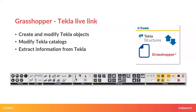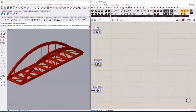Tekla Grasshopper Live Link enables algorithmic modeling for Tekla Structures using Rhino Grasshopper. The link is a set of Grasshopper components that can interact with objects in Tekla Structures in live mode. Using this link, it is possible to create and modify objects in Tekla. It can also be used for adding shapes and profiles to Tekla catalogues. You can download this Grasshopper Tekla Live Link at the Tekla Warehouse.